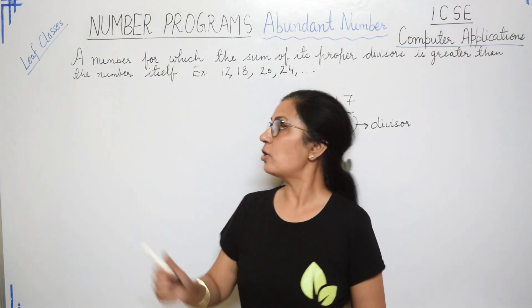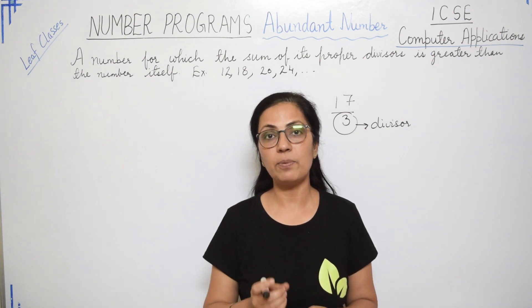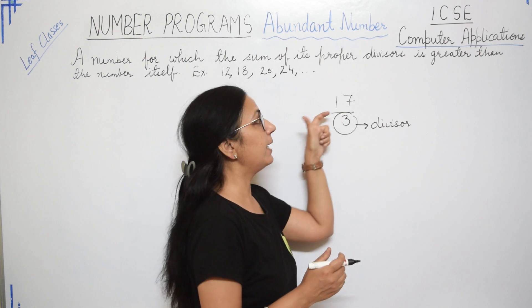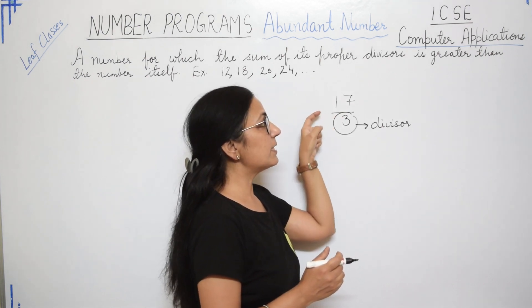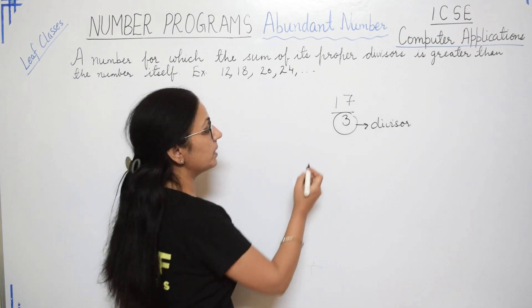And when we talk about Abundant Number, that number is not included. In proper divisor, that number is not included. That means for finding the divisors for 17, 17 will not be included.